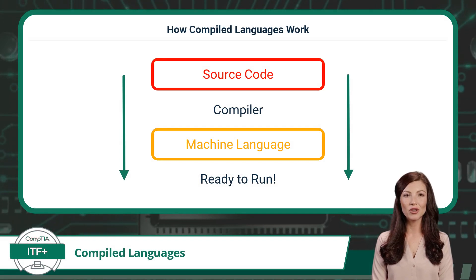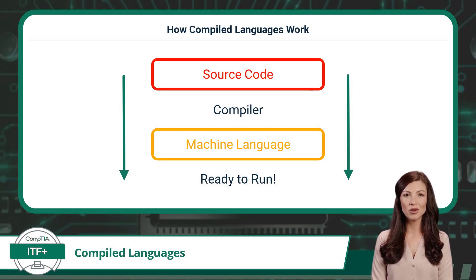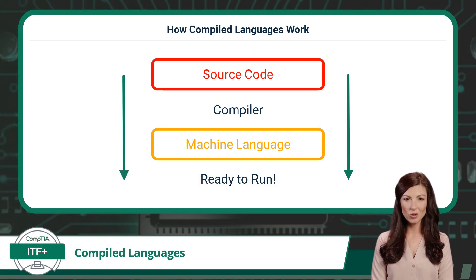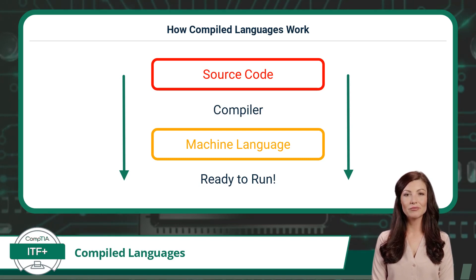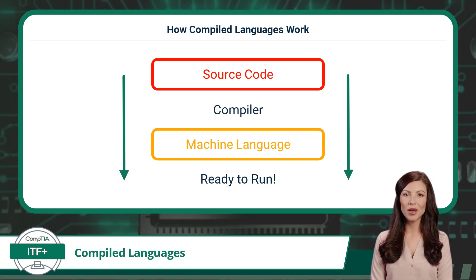Just as we use different languages to communicate with each other, computers require specific languages to understand the instructions we give them. A compiler takes the human-readable source code you write in a compiled programming language and translates it into machine code — the low-level instructions that the computer's processor can execute. Once the entire program has been translated by the compiler, the program is ready to run.